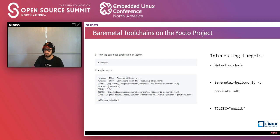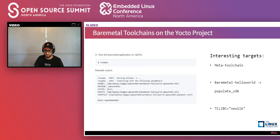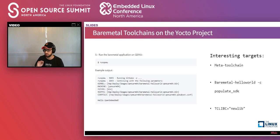Another interesting thing is switching TC libc. Instead of using bare-metal, you can use newlib. For this specific application it wouldn't do anything different, because newlib is capable of running bare metal applications — but newlib is a C library meant for embedded operating systems or embedded applications. It provides more things than just the bare metal one. The bare metal one is pretty much bare bones; newlib has a little bit more to offer.